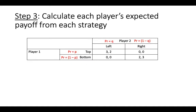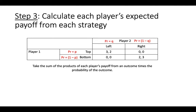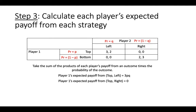The next step is to calculate each player's expected payoff from each strategy. To do this, take the sum of each player's payoff from a given outcome multiplied by the probability of that outcome. For example, player 1's expected payoff from top left is 3 times p times q.